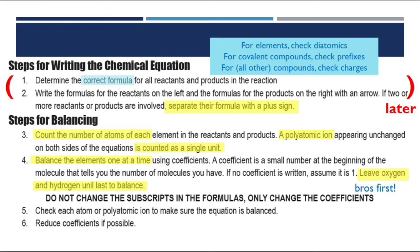Once you've counted your atoms and they're not equal, add a coefficient to try and make them equal. Then recount — check each atom to see if it's balanced. If it is, great, move on to step six. If not, go back and change another coefficient, then recount. Keep doing that process of counting and changing coefficients until the equation is balanced with equal numbers of every atom on both sides. Once balanced, there's always one last step: reduce those coefficients if possible, just like we reduced when writing chemical formulas — it always needs to be in the lowest possible ratio.